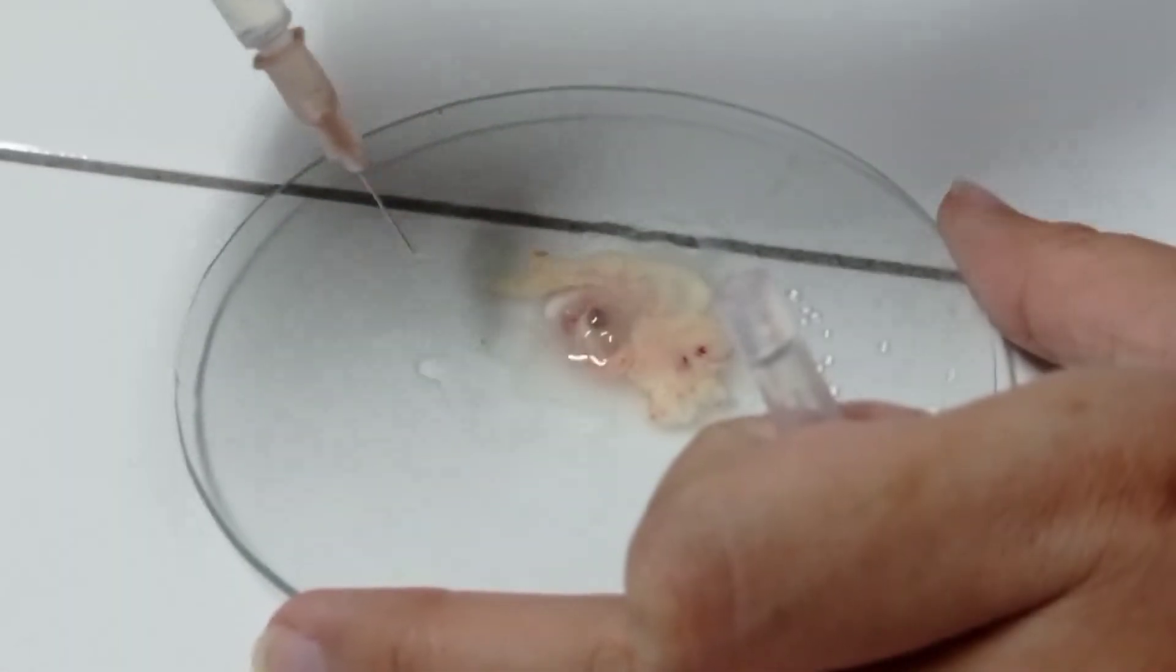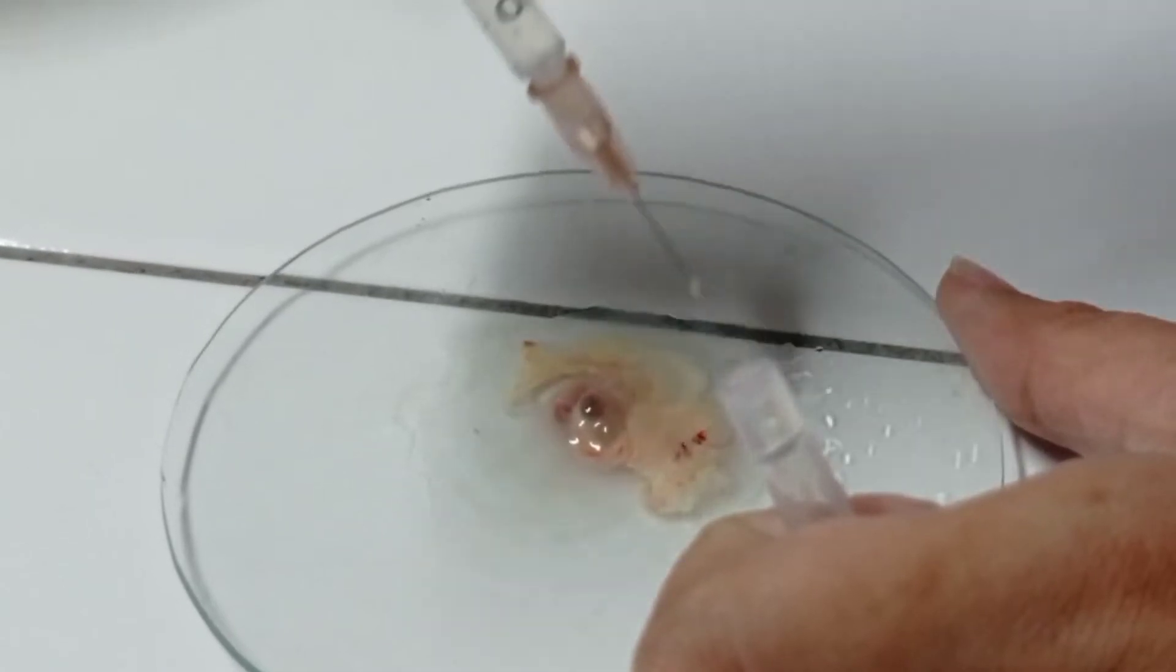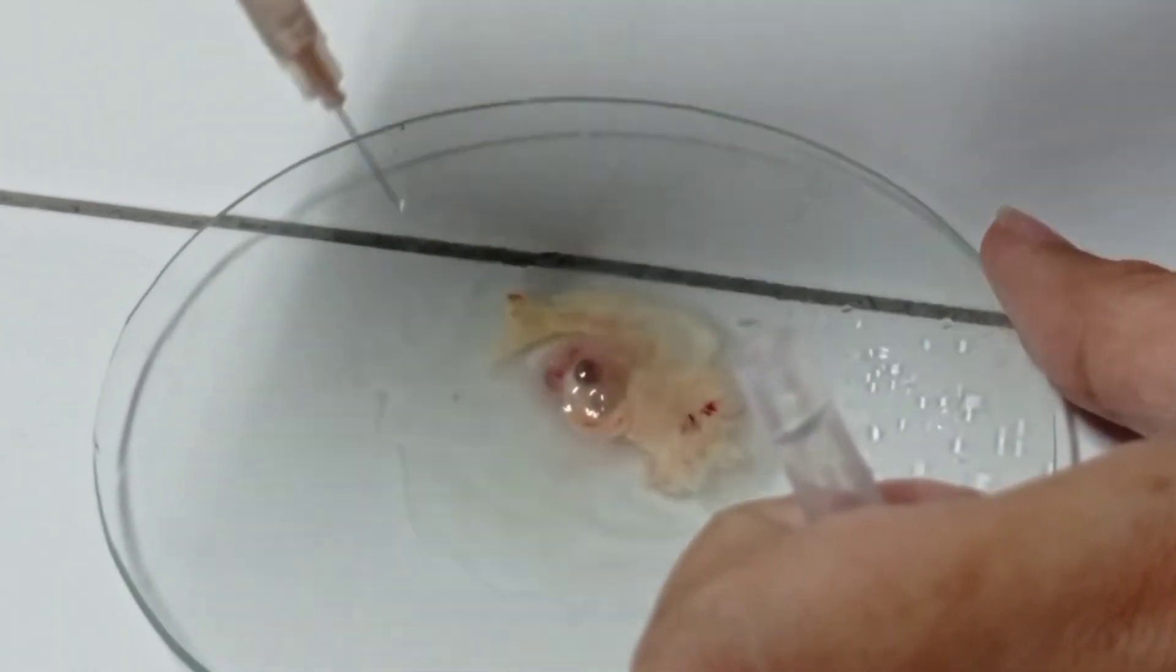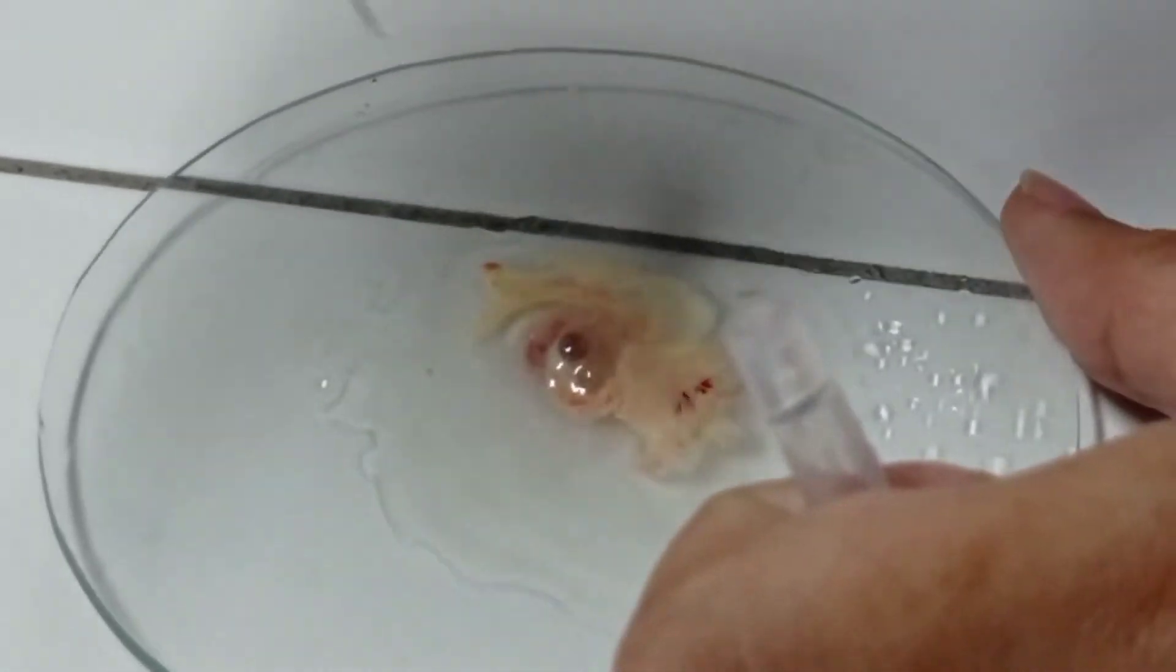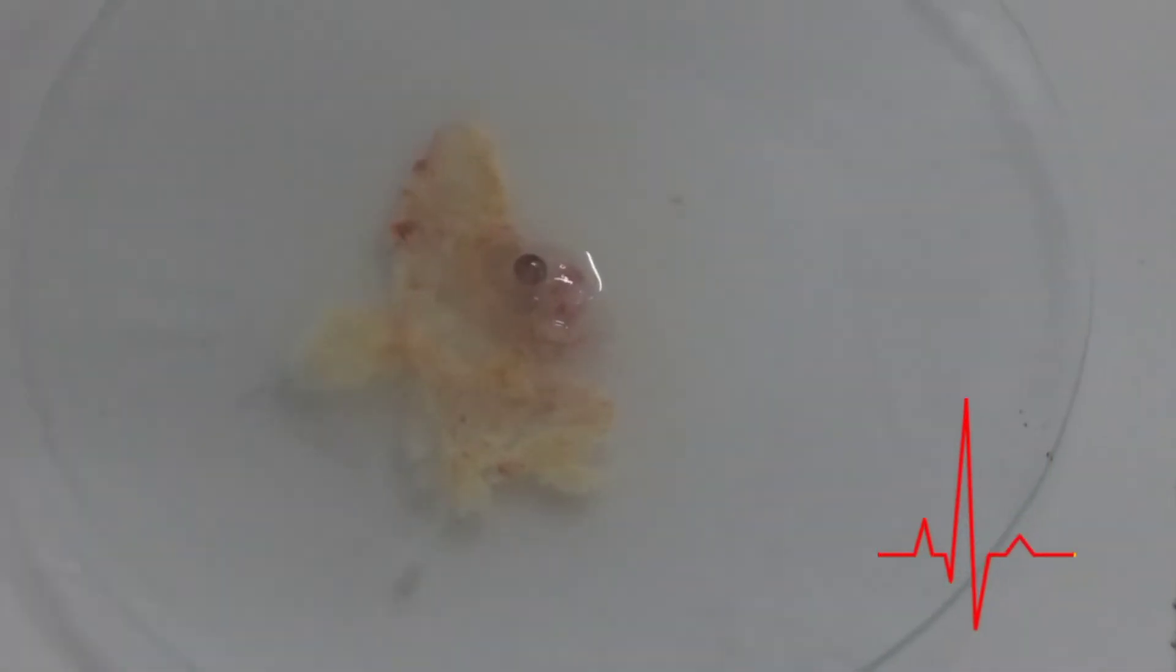Langkah ke delapan, yaitu pemberian garam fisiologis yang bertujuan untuk menjaga keadaan sel embryo agar tetap hidup selama dipersihkan dari massa sel lain dan selaput-selaput yang melindungi embryo, serta menyerap massa sel lain seperti albumin dan kuning telur dan memudahkan kita untuk memisahkan embryo dari massa telur tersebut. Setelah pemberian larutan garam fisiologis terlihat denyut jantung pada embryo ayam.